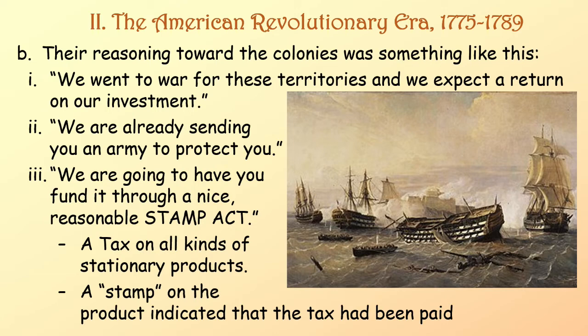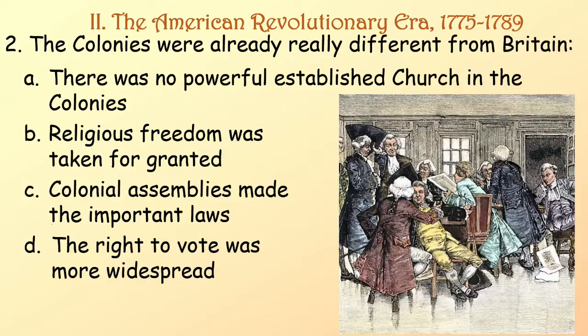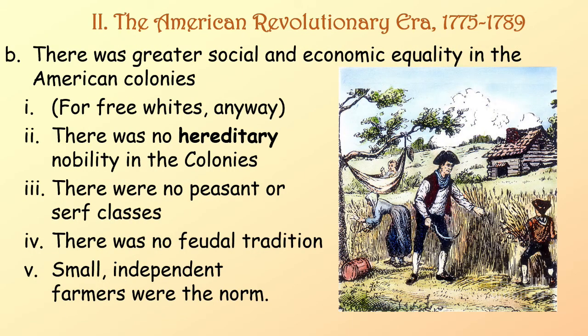The Stamp Act was a tax on all kinds of stationery products; a stamp on the product indicated that the tax had been paid. The colonies were already really different from Britain. There was no powerful established church in the colonies — religious freedom was taken for granted. Colonial assemblies made the important laws, and the right to vote was more widespread. There was greater social and economic equality in the American colonies, for free whites anyway. There was no hereditary nobility, no peasant or serf classes, no feudal tradition. Small, independent farmers were the norm.